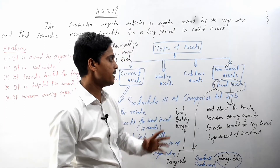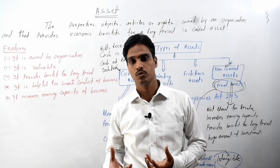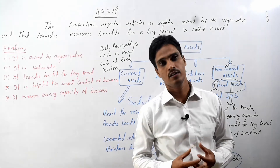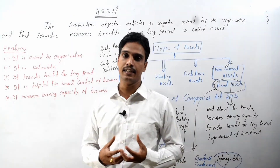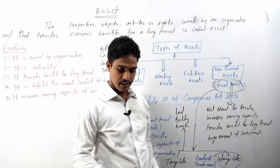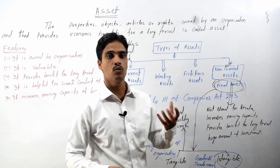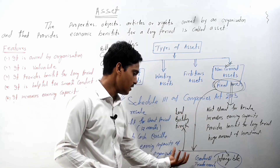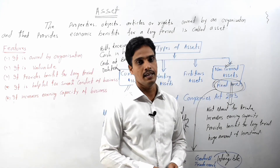Fixed assets are assets purchased for long-term use but not for resale purposes. They provide benefits for a long period and increase the earning capacity of an organization. Examples include land, building, furniture, machinery, equipment, goodwill, trademark, copyright, and license — all tangible and intangible fixed assets belong to the fixed assets category.